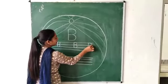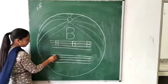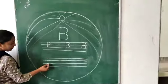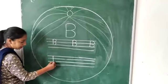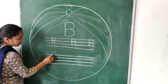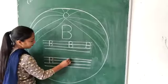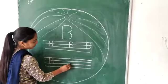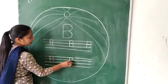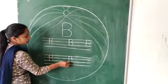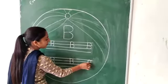Which alphabet is this? B. Starts from top. First of all you write standing line, then curve. Again curve. Standing line, curve, then again curve. Which alphabet is this? B.